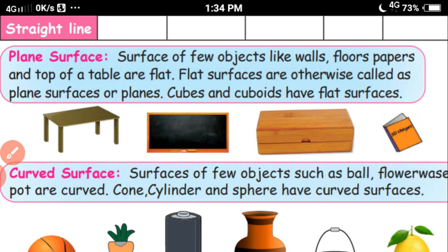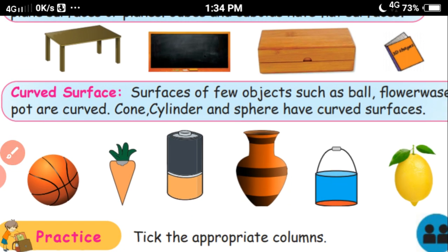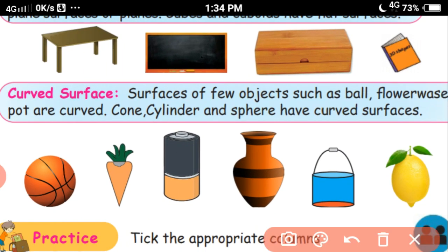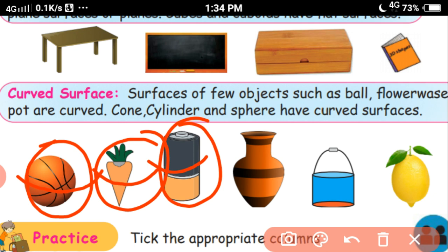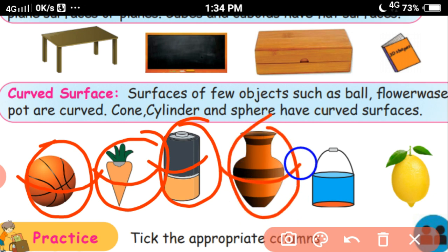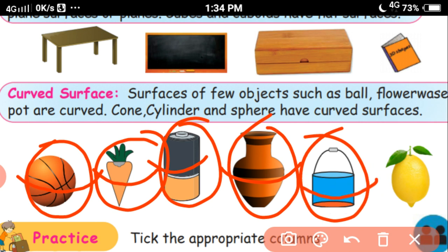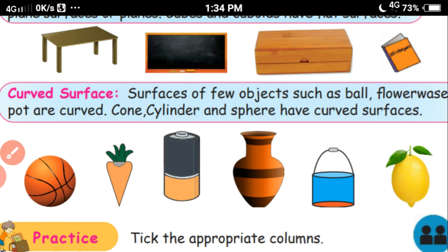Next, curved surfaces. Some objects have curved surfaces. See this ball — this is a sphere, a 3D shape. The ball has a curved surface. The cone shape has a curved surface. Cylinder — this is a curved surface. Cylinder shape is like a battery — the outer part is a curved surface. Cylinder shape is also like a vessel and a bucket. Lemon is a curved surface. Cone, cylinder and sphere have curved surfaces.